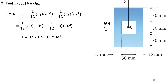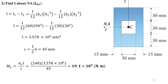The second step is to find the moment of inertia about the neutral axis, which is 3.578 times 10 to the power of 6 mm⁴. The largest distance from the neutral axis, c, is half the height equals 45 mm. Therefore, the yield moment can be calculated using the flexural formula, giving My equals 19.1 times 10³ N·m.